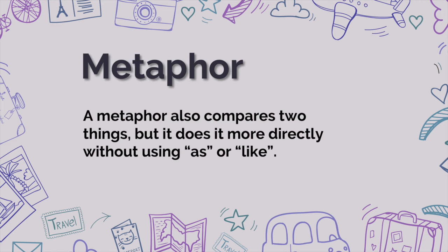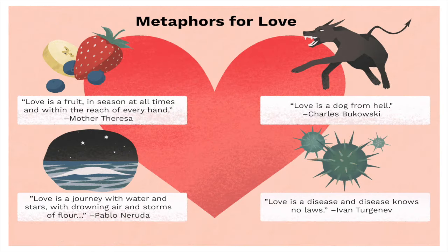The next device is metaphor. Metaphor also compares two things, but it does it more directly, without using 'as' or 'like.' Let's take a look at metaphors for love. Mother Teresa said, 'Love is a fruit, in season at all times, and within the reach of every hand.' Another example: 'Love is a dog from hell,' said by Charles Bukowski. Another metaphor: 'Love is a journey with water and stars, with drowning air and storms of flower,' by Pablo Neruda. And last but not least: 'Love is a disease and disease knows not loss,' by Turgenev.